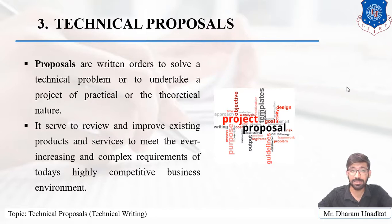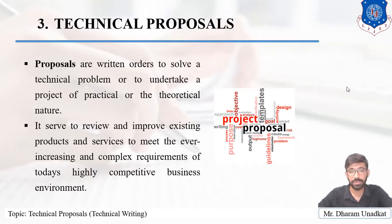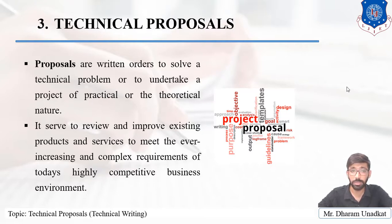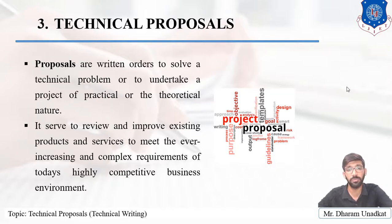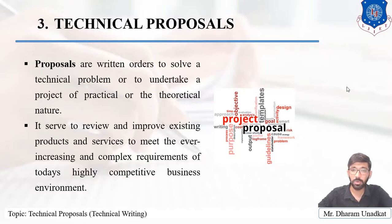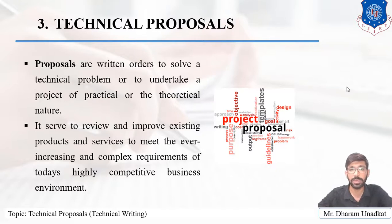Next is consistency. There must be consistency or continuity from one point to another, or from one topic to another in the writing. And the last C is correctness. If you are not confident enough with your writing, you can verify with your colleagues or friends, but you have to check that there are no grammatical or other mistakes. So this 5C — clarity, completeness, consciousness, consistency, and correctness — you have to take care of for effective technical writing.